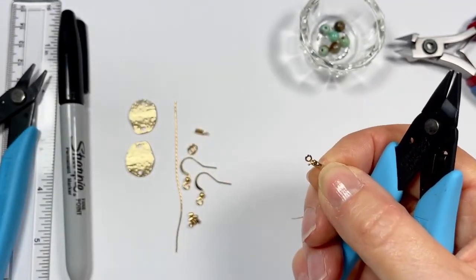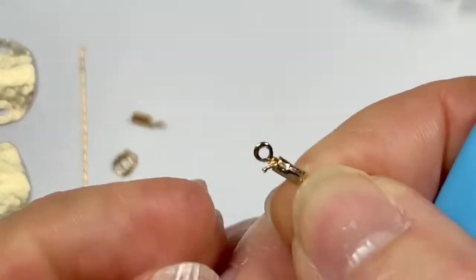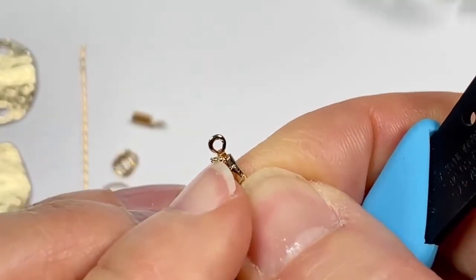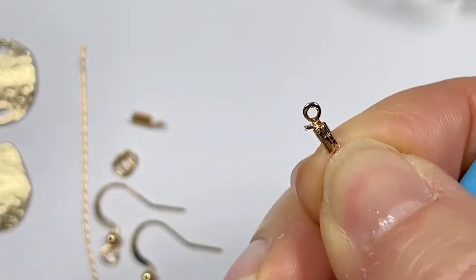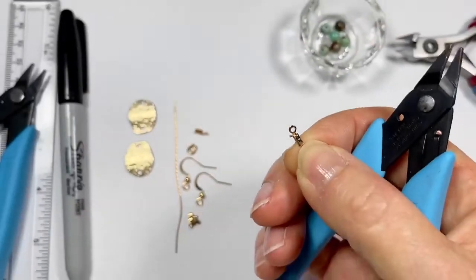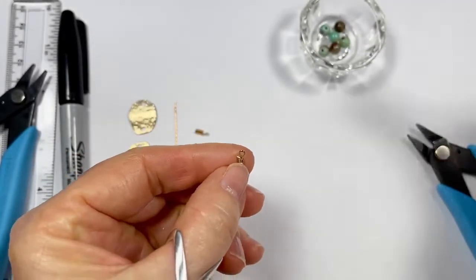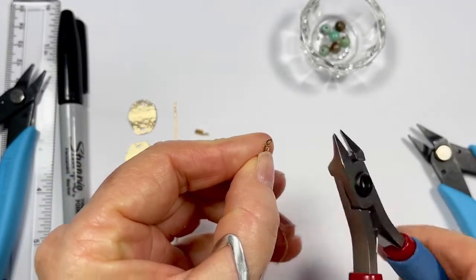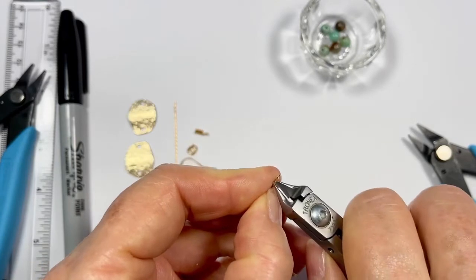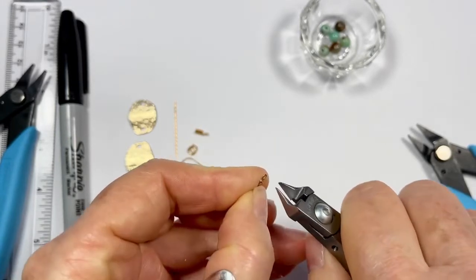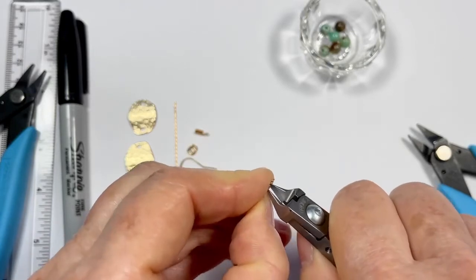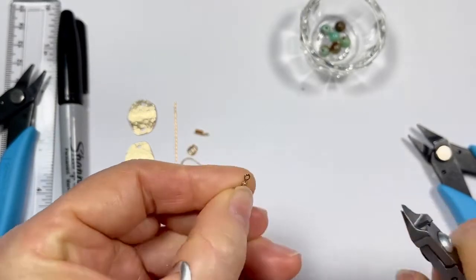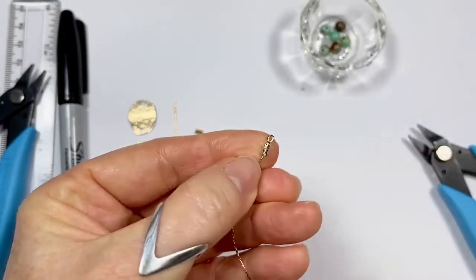Now there's a little bit of chain that's still sticking out here, so we're just going to trim that off with the flush cutter. Just make sure that you don't cut the loop as well. And then we'll do the other one.